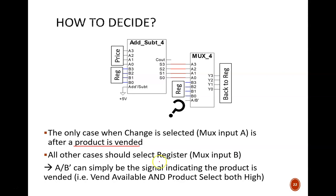So, the A slash B prime input can be a signal that we already compute through the AND gate, telling us that Vend available and product select are both active.